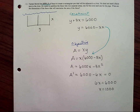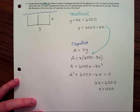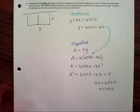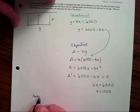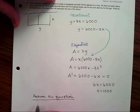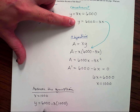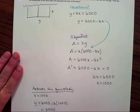Now we need to answer the question. What are the dimensions of the fence? I know x equals 1,000. To find y, I plug x back into the solved constraint equation: y equals 6,000 minus 3 times 1,000, so y equals 3,000. Units are feet.